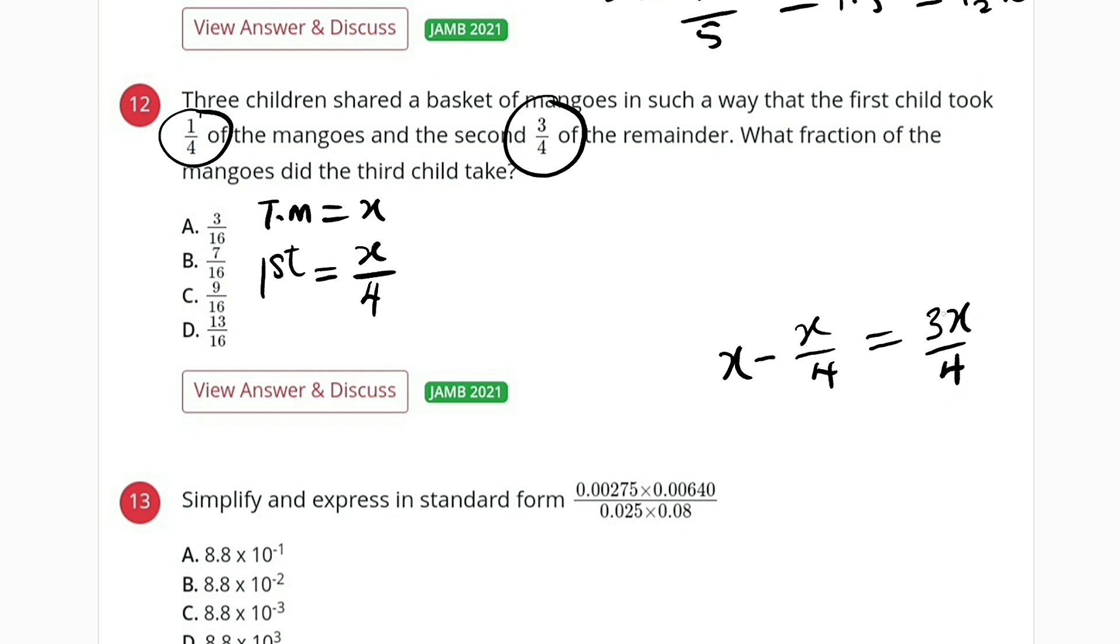Therefore, the second child will take 3 over 4 of this, and this is equal to 9x divided by 16, because 3x times 3 is 9x and 4 times 4 is 16. Therefore, the second child got 9x divided by 16.